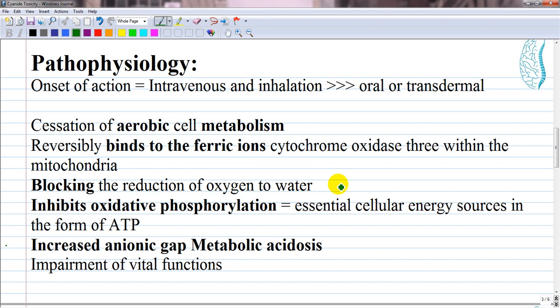Cyanide's main effect is that it inhibits oxidative phosphorylation, a process where oxygen is utilized for the production of essential cellular energy sources in the form of ATP. By binding to the enzyme cytochrome C oxidase, it blocks the mitochondrial transport chain.